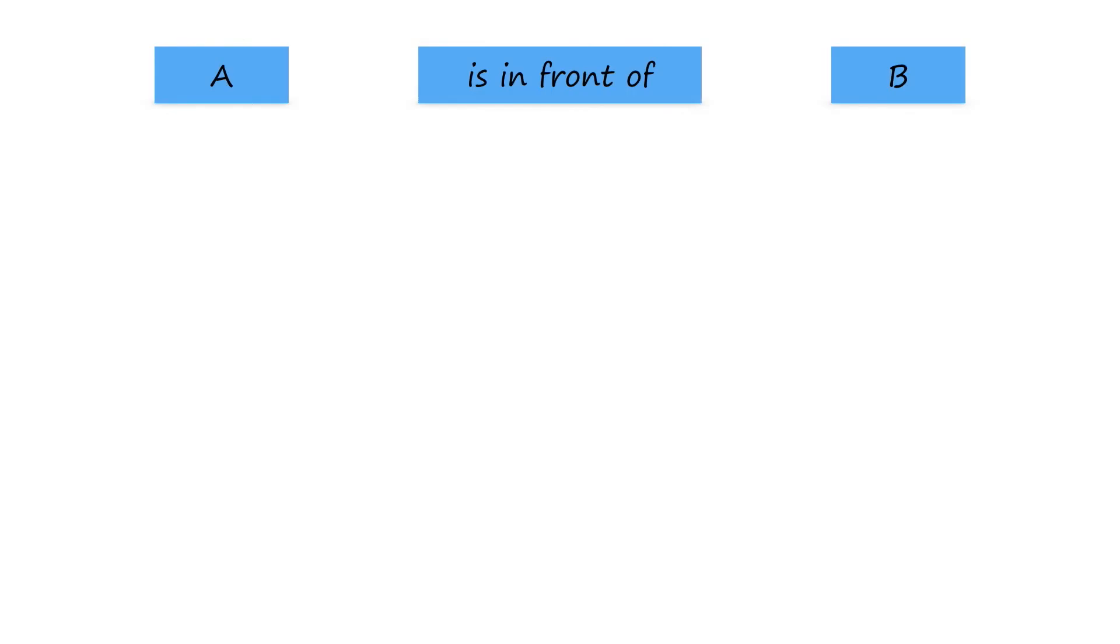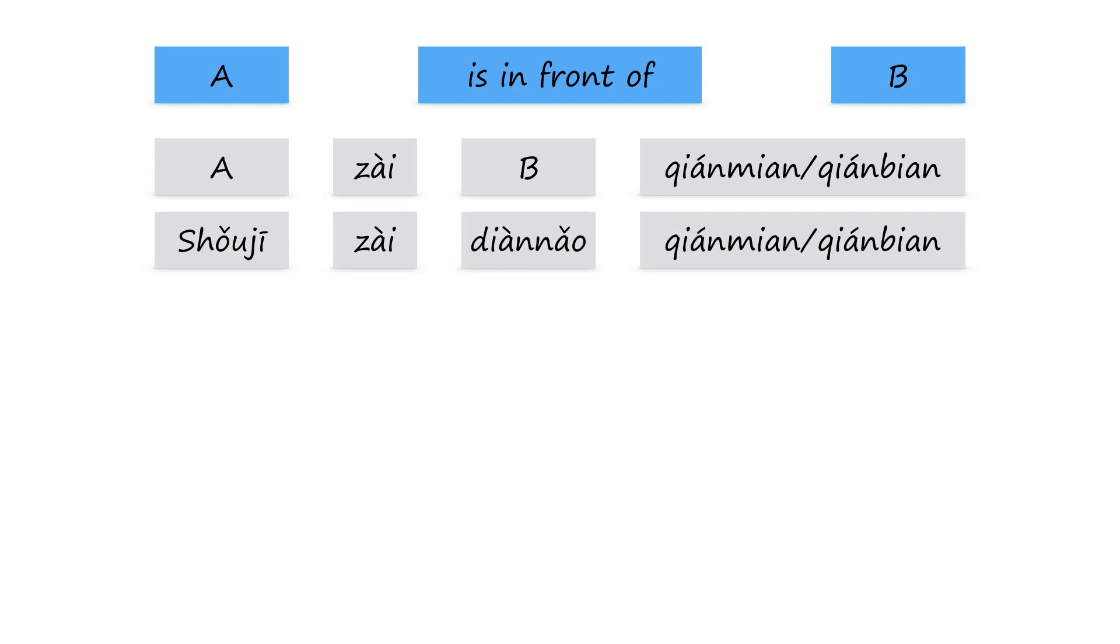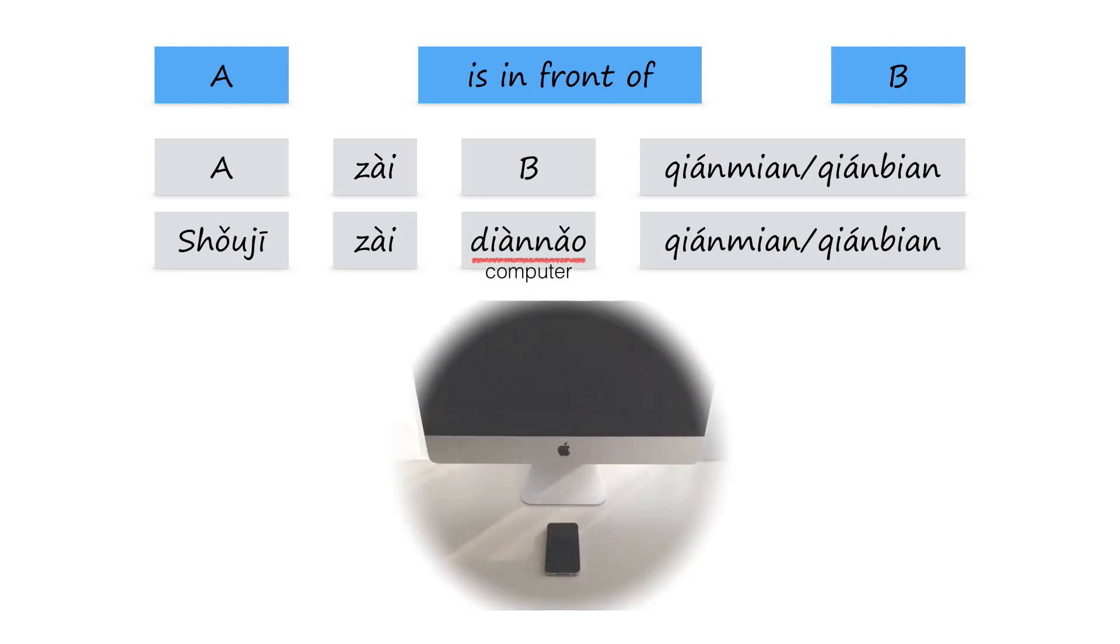In our previous lesson, we learned how to say A is in front of B in Chinese. It's A zai bi qian mian or qian bian. For example, 手机在电脑前面. 电脑 means computer, so the sentence means the mobile phone is in front of the computer.